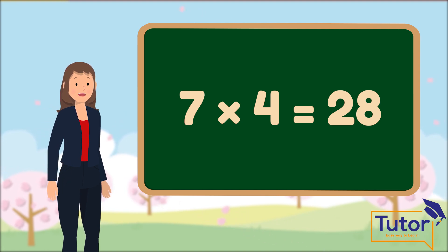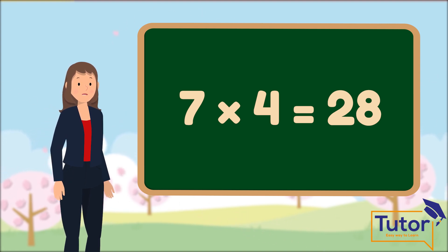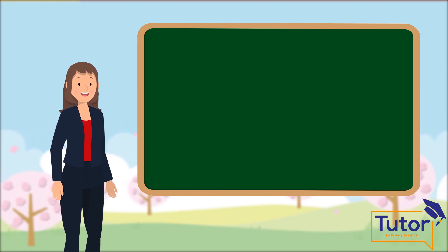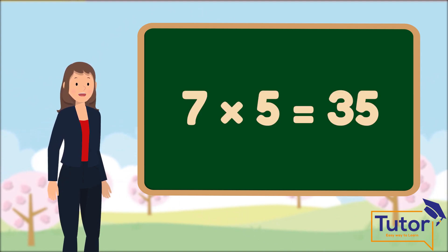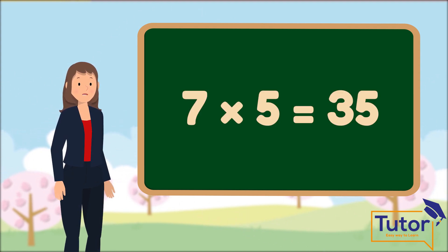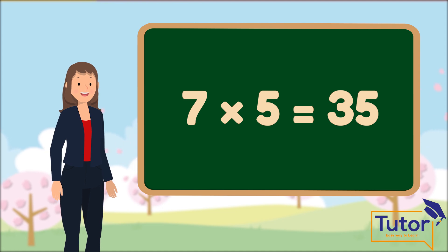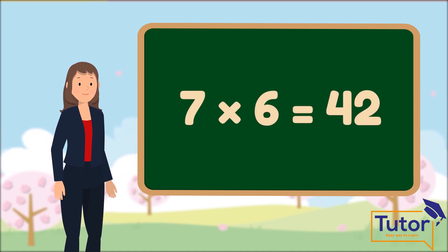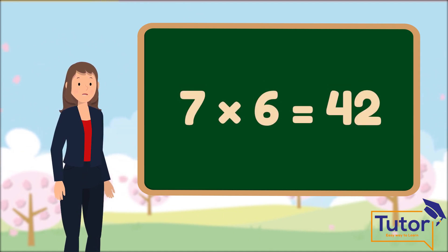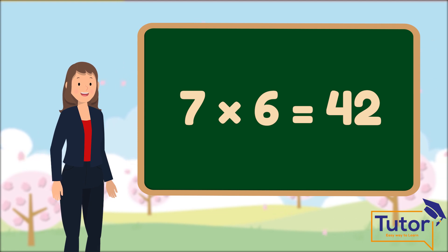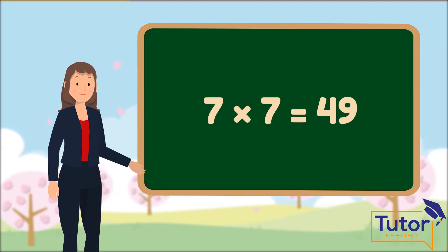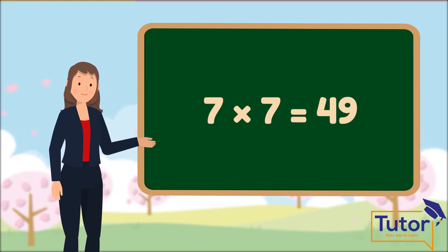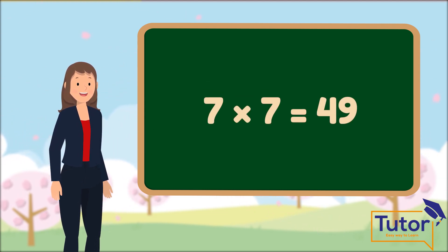7 times 4 is equal to 28. 7 times 5 is equal to 35. 7 times 6 is equal to 42. 7 times 7 is equal to 49.